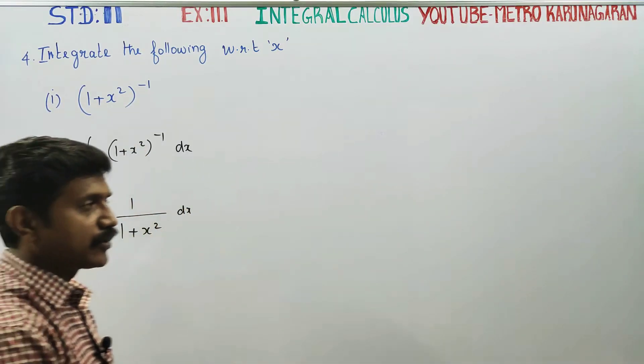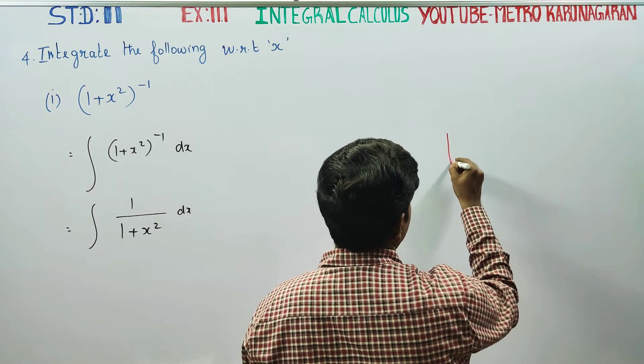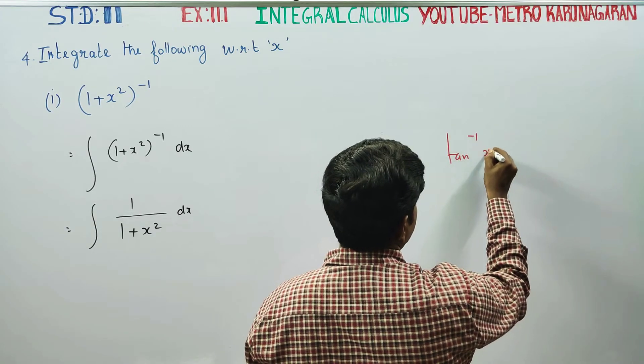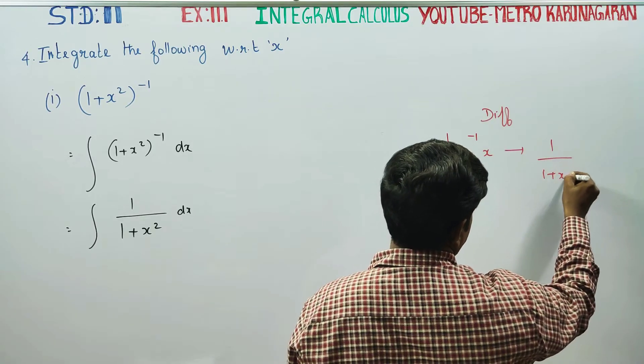Number 1, differentiation formula: differentiation of tan⁻¹(x), differentiate and you will be getting 1/(1+x²).